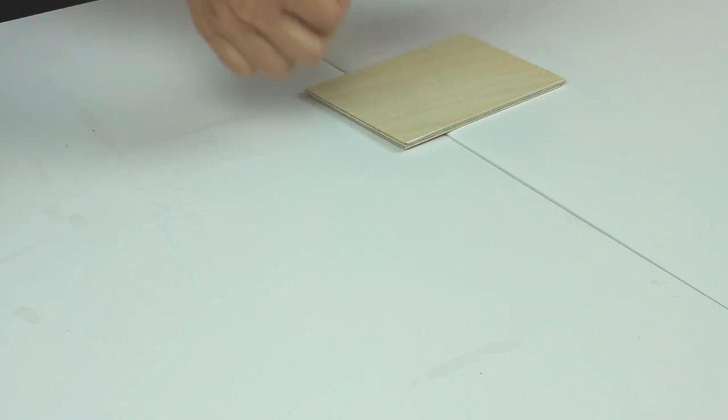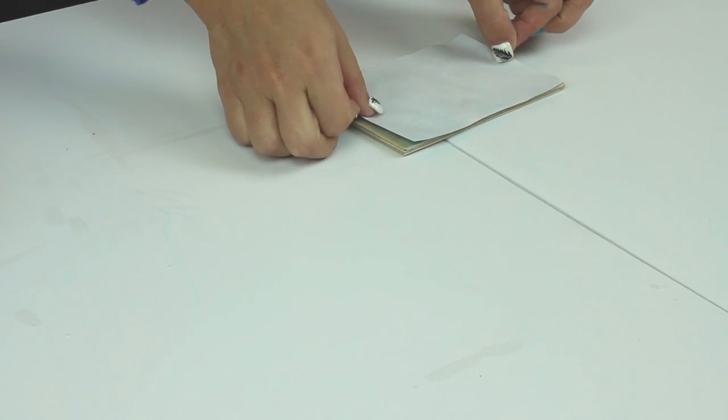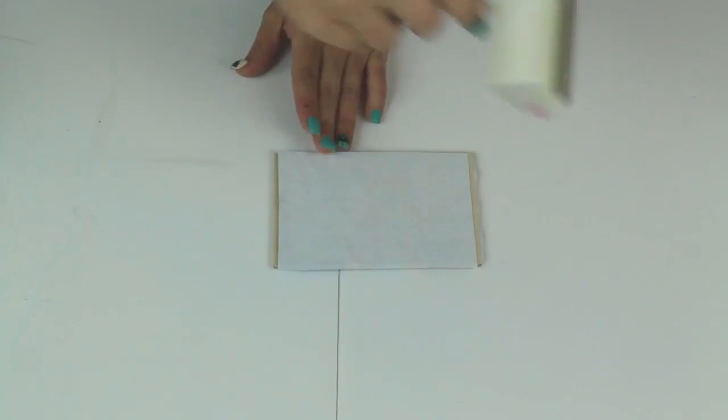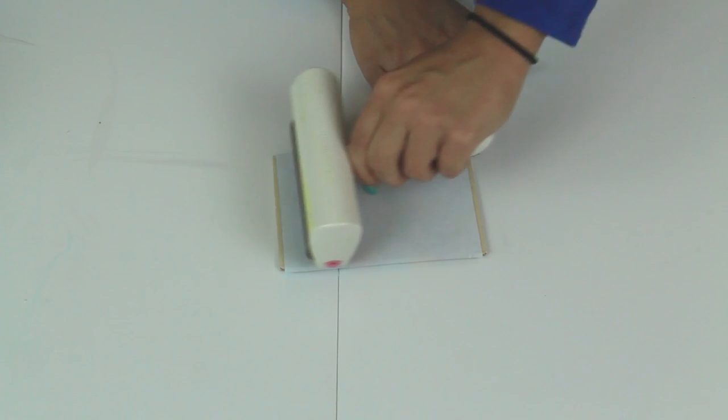While the medium is still wet, position the image face down on the project surface. Use a brayer, old credit card, or other tool to smooth out any creases or bubbles. Always begin in the center, working outward toward the edges.